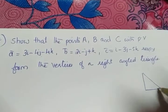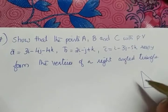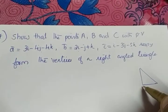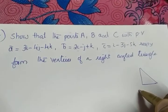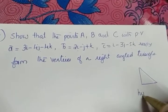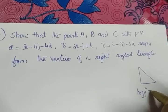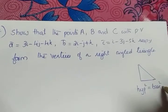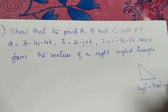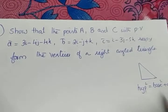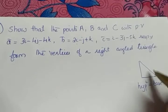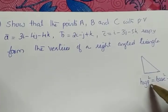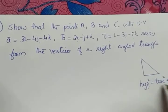As soon as we see a right triangle, the theorem which comes to our mind is the Pythagorean theorem. Pythagoras theorem says that hypotenuse squared is equal to base squared plus altitude squared. So here we are going to check whether the given sides satisfy this condition.